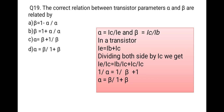By cross multiplication we get the relation: alpha = beta / (1 + beta). So the correct option is D.